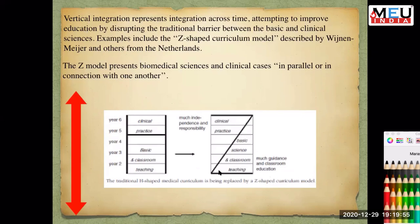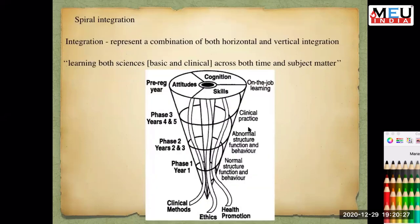Across all the phases in the Z model there is exposure to clinical practice, increasing gradually from phase one. This is how we transition from an H-type model to a Z-shaped model. Spiral integration represents both horizontal and vertical integration happening together. Across all phases there is vertical integration, horizontal integration, and additionally the student is learning clinical methods, ethics, and health promotion — developing attitudes, cognition, and skills throughout all phases.